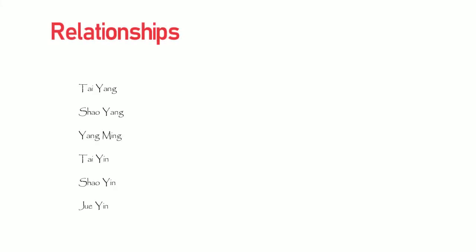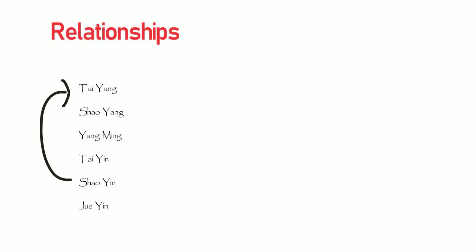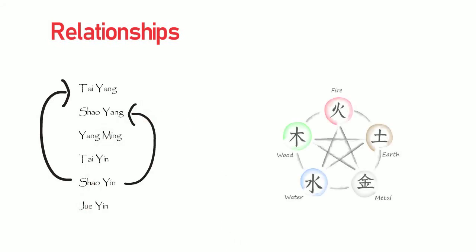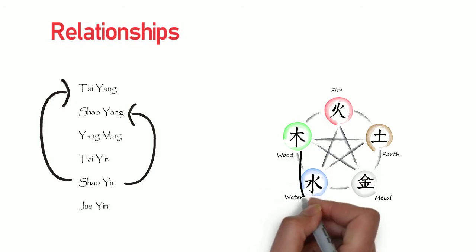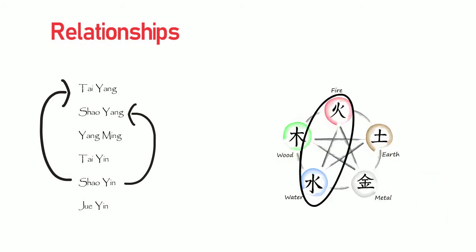The relationships mostly used in clinical practice are Shao Yin and Tai Yang, and Shao Yin and Shao Yang, as well as the relationship with Shao Yin itself — the heart and kidney relationship, fire and water according to five element theory.